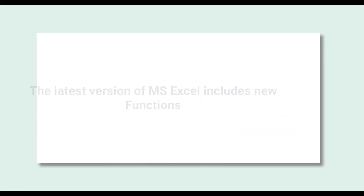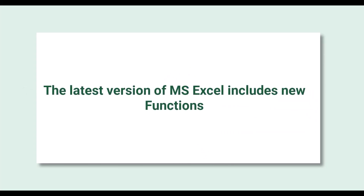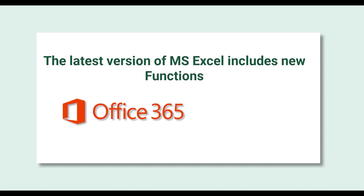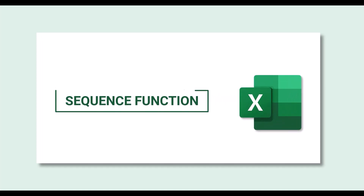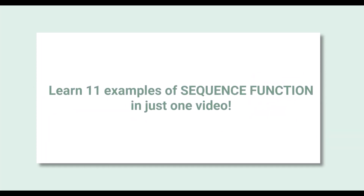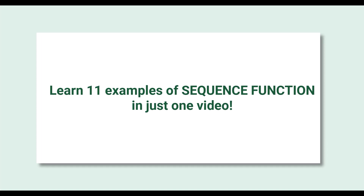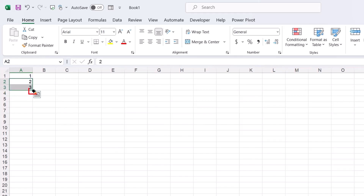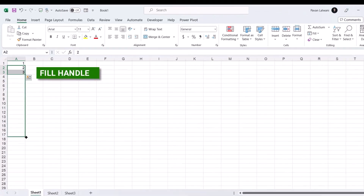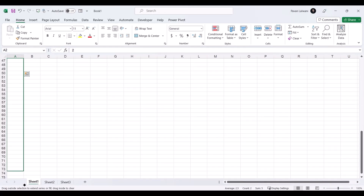Welcome to this new video on Microsoft Excel. There are many new functions added in recent versions, especially Microsoft Excel Office 365 and 2021. One of my favorite functions is SEQUENCE, which I'll be covering in this video. Suppose I have to type numbers 1, 2, 3 and want to see them till 1000 — the traditional method is to select 2 and 3, then drag down using the fill handle until I reach 1000. It's a lengthy process.